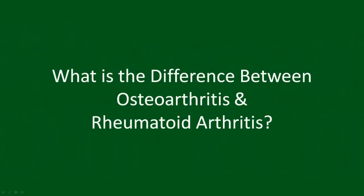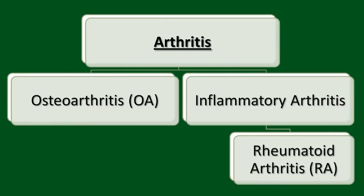Rheumatoid arthritis and osteoarthritis are terms often used interchangeably, but in fact are two very different joint conditions. Generally speaking, arthritis can be broken into two broad categories: osteoarthritis and inflammatory arthritis. Rheumatoid arthritis is the most common form of inflammatory arthritis.